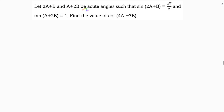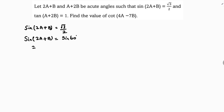Let 2a+b and a+2b be acute angles such that sine(2a+b) = √3/2 and tan(a+2b) = 1. Find the value of cot(4a−7b). Since sin(2a+b) = √3/2, and sin(60°) = √3/2, we get sine(2a+b) = sin(60°). So 2a+b = 60°. This is our first equation.